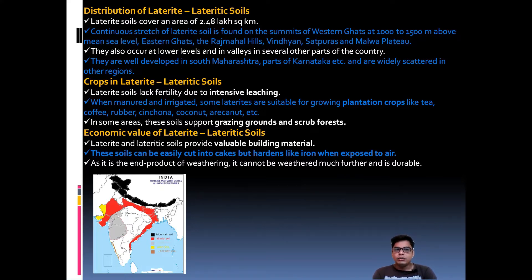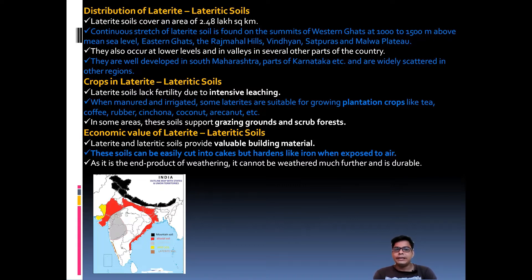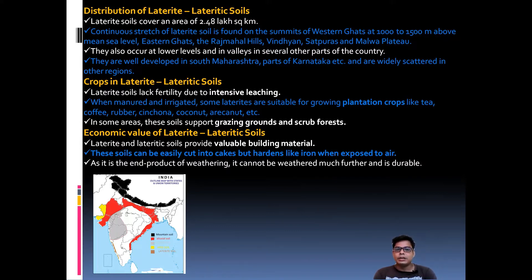They are also well developed in southern Maharashtra and parts of Karnataka, and are widely scattered in other regions. Laterite and lateritic soils lack fertility due to intense leaching. However, plantation crops like tea, coffee, rubber, cinchona, coconut, and arecanut can be cultivated. In some areas, the soil supports grazing grounds and scrub forests.